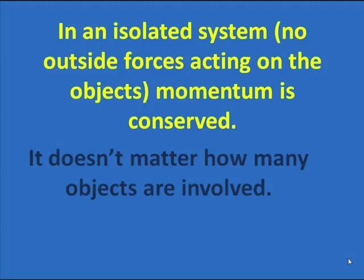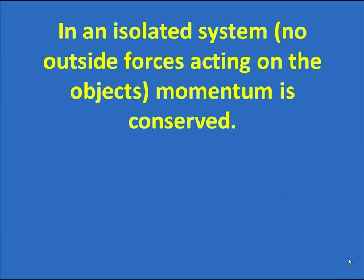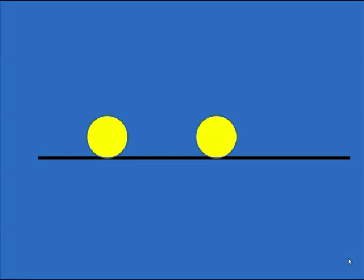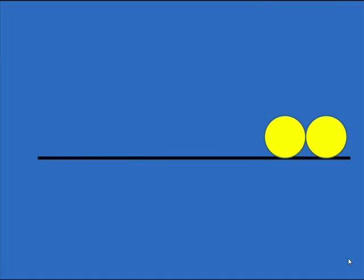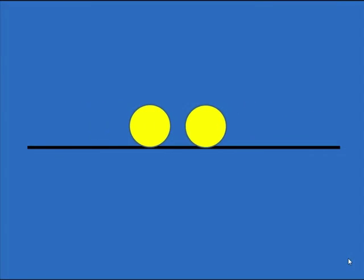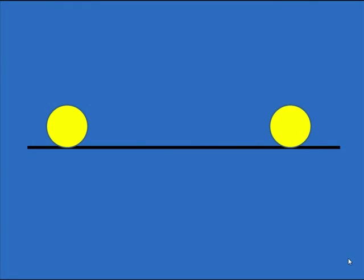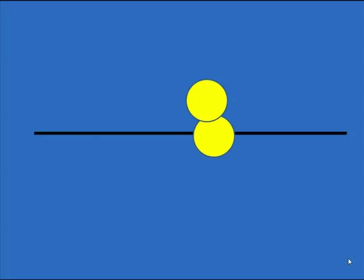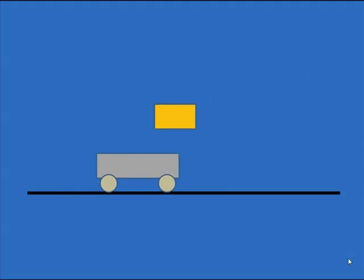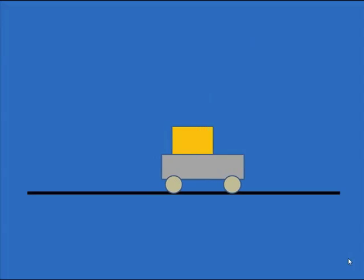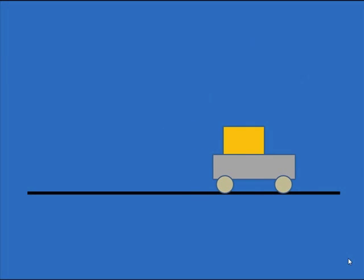You may have two objects that collide and then move off at a different speed. The momentum is conserved. You may have two objects that collide and bounce off of each other. Again, momentum is conserved. You may have objects that collide at an angle. Again, momentum is conserved. You may have a cart moving along and something falls in that cart and then they move off at a different speed. Again, momentum is conserved.